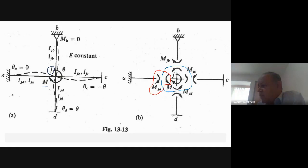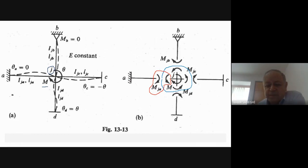You know the carryover factor: a portion of this one transfers to the far end. If we have M_JA here, for constant EI, half of that transfers to the other part. The same situation we have for moment M_JB, and half of that transfers to the other part. And also for M_JC, half of them transfer to the other part. And again for moment M_JD, half of them transfer to the other end of the member.